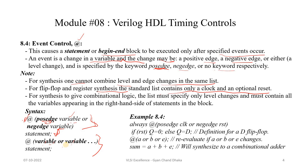For example: `always @(posedge clk or negedge reset) if (reset) q = 0; else q = d;` — this event control with edge-sensitive variables results in sequential logic elements such as a flip-flop. The second example uses a level-sensitive sensitivity list and will synthesize to a combinational adder.